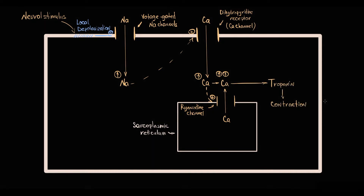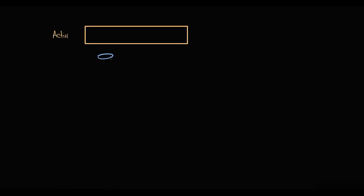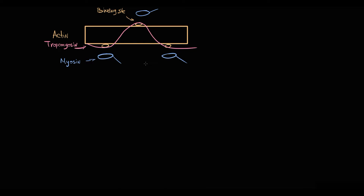To explain how contraction occurs: there is an actin molecule, there are myosin molecules, and there are binding sites on the actin molecule. But in the relaxed state, binding sites are covered by tropomyosin. So in resting state, tropomyosin does not permit myosin to bind to actin binding sites.